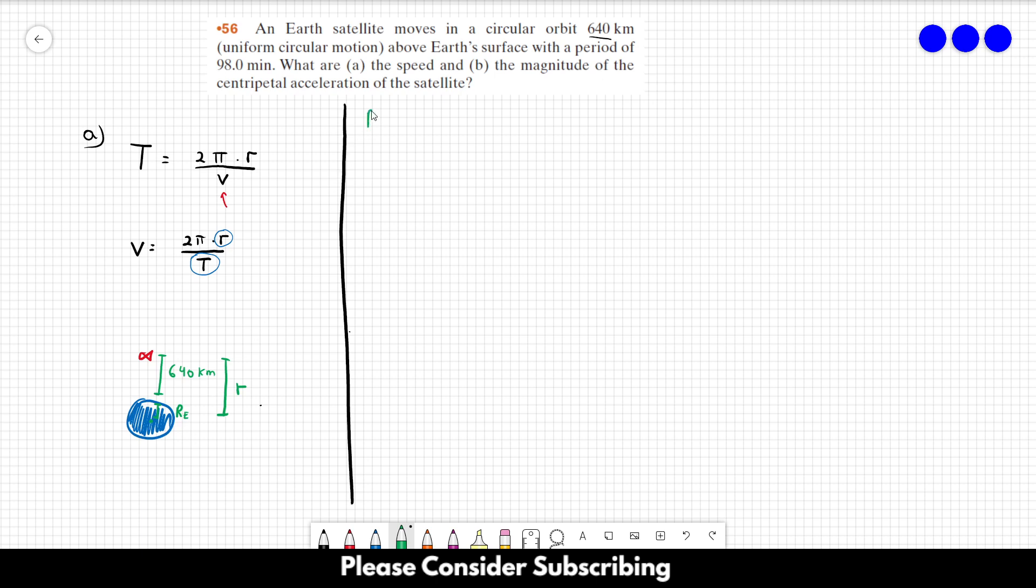So if you Google the radius of the Earth, you would find something like 6.37 times 10 to the 6 meters. So the radius of the movement is equal to 6.37 times 10 to the 6 plus 640 kilometers, so 10 cubed. And this is equal to 7.01 times 10 to the 6 meters.